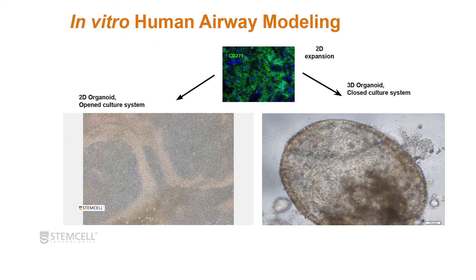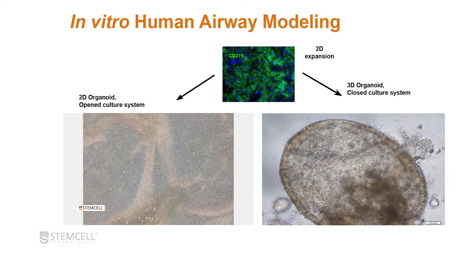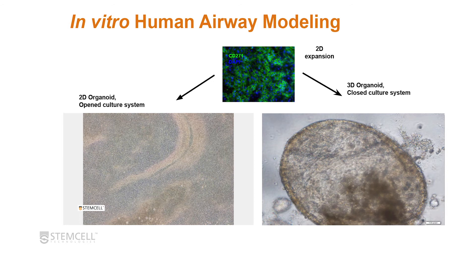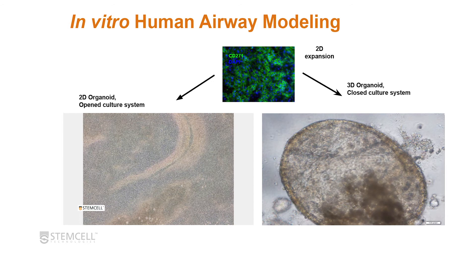You can also observe cilia beating, which is quite impressive to see. In 2D culture, you can observe the coordinated cilia beating moving mucus on top of the cells quite rapidly. In a 3D organoid system, you can also observe cilia beating and mucus or other debris in the lumen swirling around in a coordinated manner.